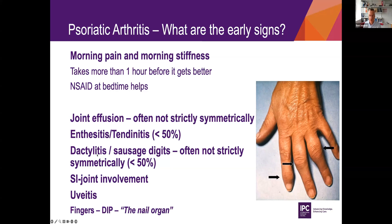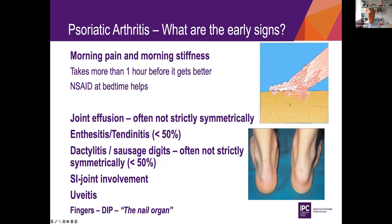Patients often have dactylitis and can have all kinds of other joint involvement, especially back pain and SI joint involvement, but also uveitis. Here is a classic example of a psoriatic patient with not completely symmetric arthritis in the fingers. The enthesitis can be severe — here is a patient with severe enthesitis in the Achilles tendon, which is often the most common location for their enthesitic condition.